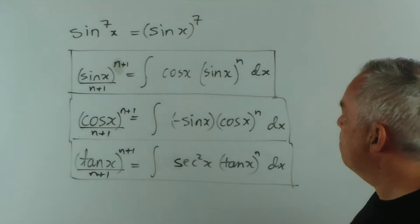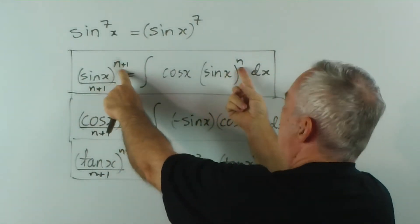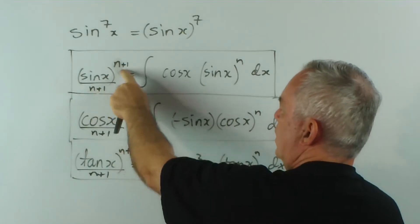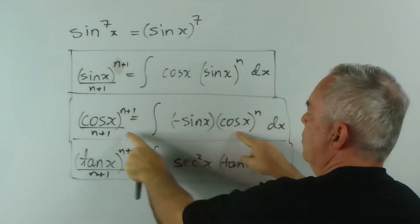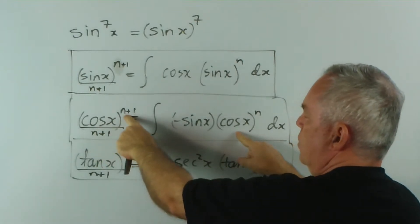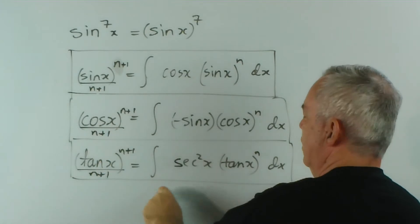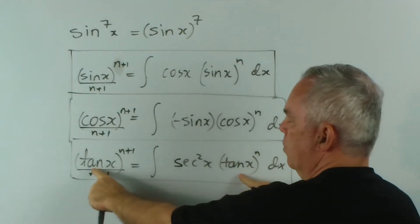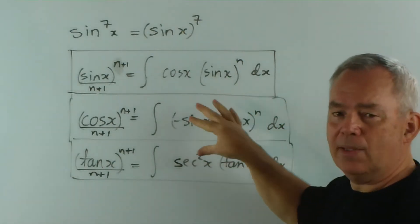And in each case, we simply write this function to the power n plus 1 over n plus 1 with the same number. So if it's the power of cos, it becomes cos x to one extra power with power plus 1 over that. And if it's tan x to the power n, then the result will be tan x to the n plus 1 over n plus 1. That's the key pattern.